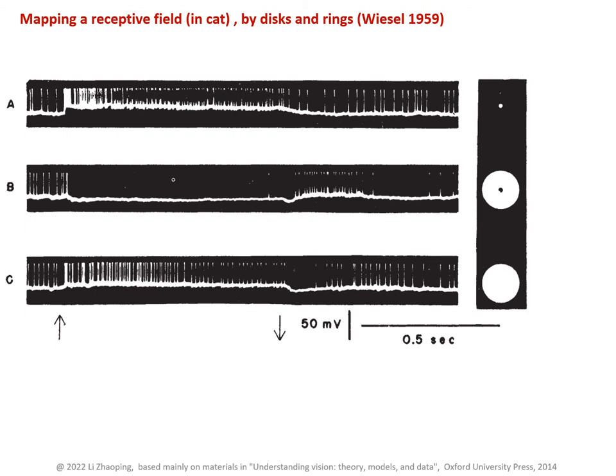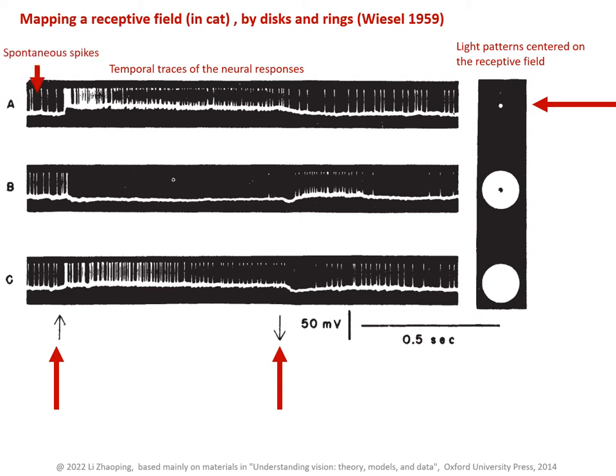One can also map a receptive field by giving a disk of light or a ring of light centered on the receptive field, and this was done by Wiesel in the late 1950s. When a small disk of light was at the center of the receptive field, this neuron fired a lot of action potentials. This marks the time when this disk was turned on, and this is when the disk was turned off more than half a second later. The neuron spontaneously fired action potentials before the disk was turned on, so the disk increased the firing rate substantially.